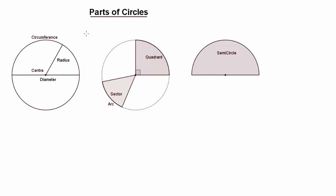Before we get into the calculations, what we need to do is recap the correct names for the different parts of circles. The circumference is the distance all the way around the outside of a circle. The key measurements are the radius, which is the distance from the centre of the circle to the circumference, and the diameter, which is the distance all the way across the circle through the centre.